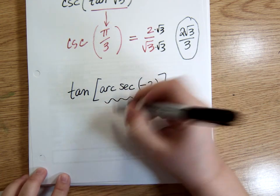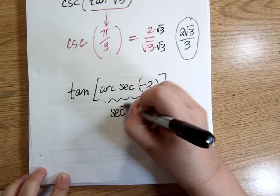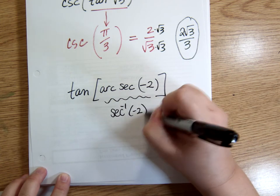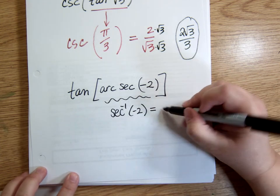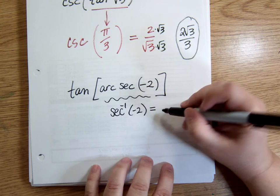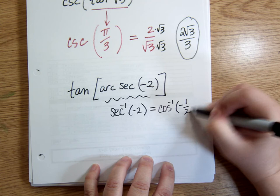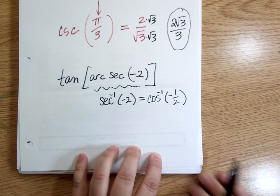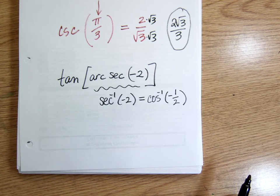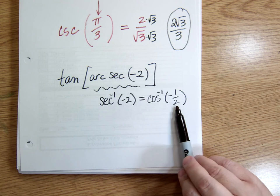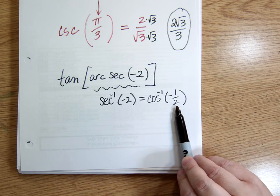Which says inverse secant of negative 2, which is the same thing as inverse what? Inverse cosine of negative 1 half. So because it's a cosine, I'm using either quadrant 1, if it were positive, which it's not, or quadrant 2. Remember, that's called my restricted domain.